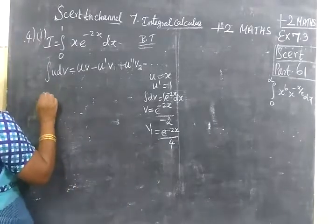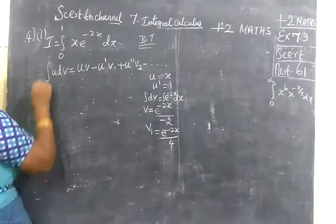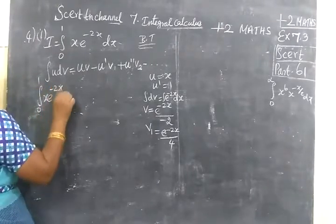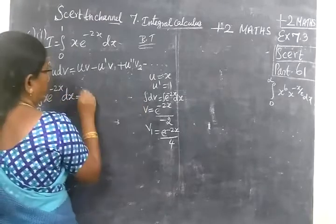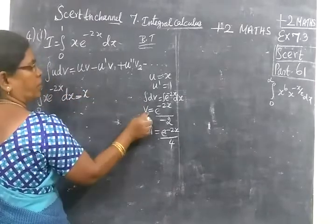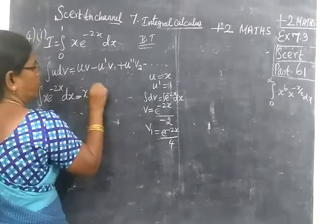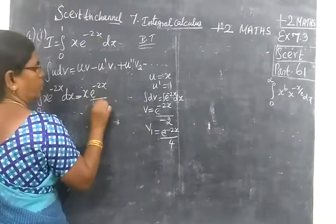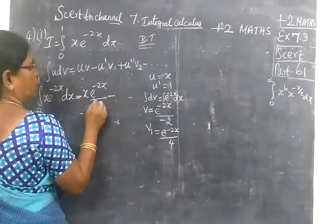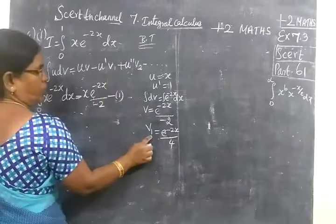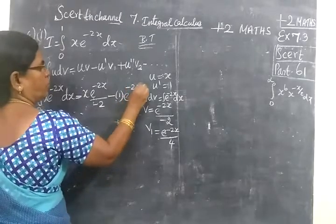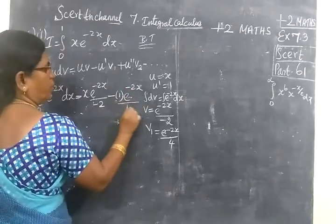Now we apply here. So the integral from 0 to 1 of x times e power minus 2x dx equals uv. What is u? x. What is v? e power minus 2x divided by minus 2, minus u dash times v1. u dash is 1, then v1 is e power minus 2x divided by 4.